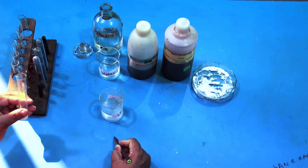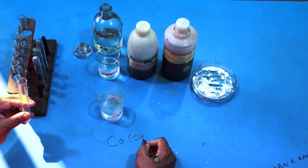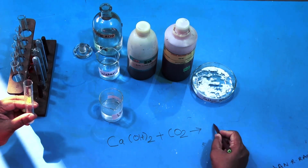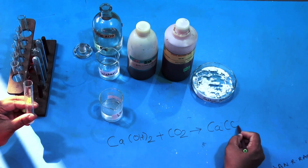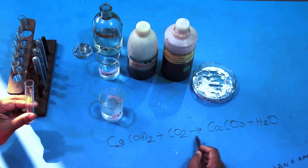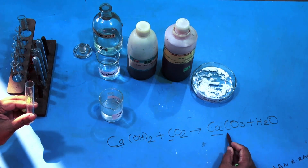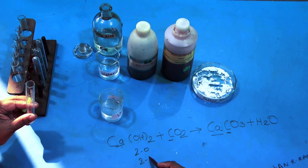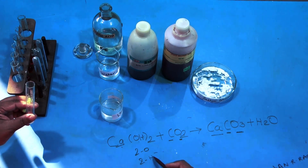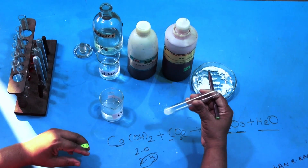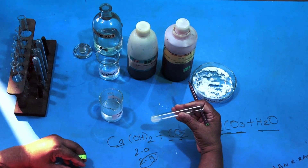I will explain by chemical equation. Lime water is Ca(OH)₂. Adding CO₂ gas to it gives calcium carbonate (CaCO₃) plus water (H₂O). Calcium is here, carbon is here, 2 oxygens from CO₂ plus 1 oxygen from Ca(OH)₂ gives O₃ in CaCO₃, and the remaining 2 hydrogen and 1 oxygen gives H₂O. Because of CaCO₃, the solution has turned milky white in colour, as CaCO₃ is white in colour.